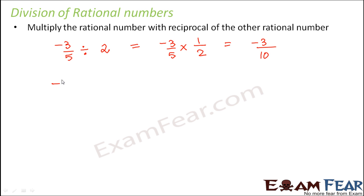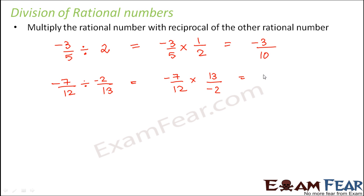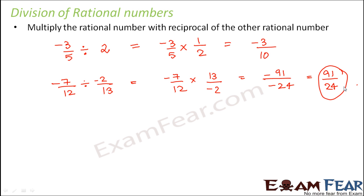Let's take another example: minus 7/12 divided by minus 2/13. Dividing by minus 2/13 is the same as multiplying by 13 over minus 2. So minus 7 into 13 gives minus 91, and 12 into minus 2 gives minus 24. The minus signs cancel out, so you get 91/24. So whenever you want to divide two rational numbers, you simply multiply by the reciprocal of one of the numbers.